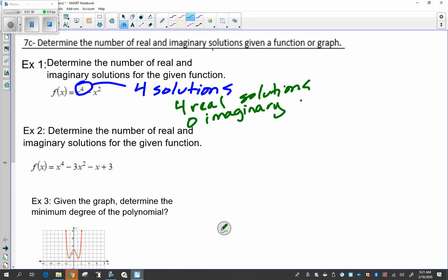So looking at the next one, looking at this example two, again we have the biggest degree, the biggest exponent is 4, so this is 4, there are 4 total solutions here.